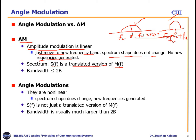The bandwidth in AM modulation is usually less than or equal to 2B. For example, if you have a signal with a bandwidth of B hertz, after AM modulation its bandwidth changes to at most 2B. So this was amplitude modulation.